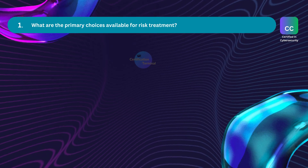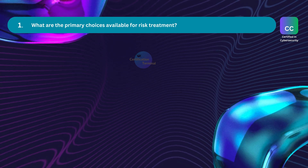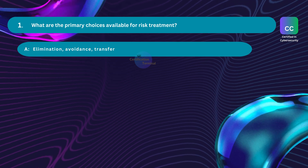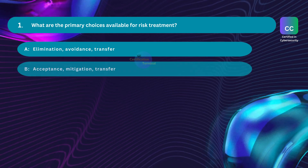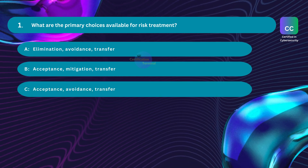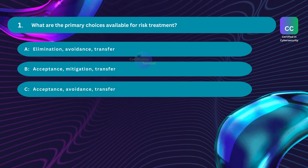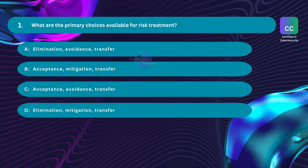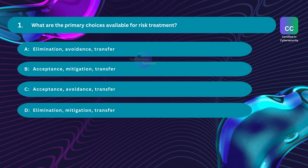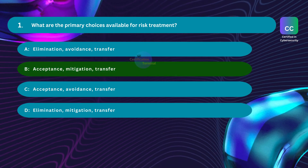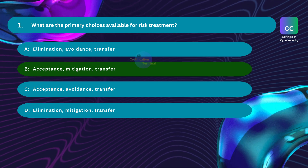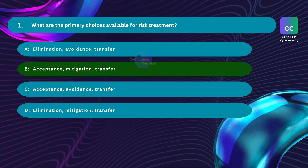Question number one: What are the primary choices available for risk treatment? Option A: elimination, avoidance, and transfer. Option B: acceptance, mitigation, and transfer. Option C: acceptance, avoidance, and transfer. Option D: elimination, mitigation, and transfer. The correct answer is Option B: acceptance, mitigation, and transfer.